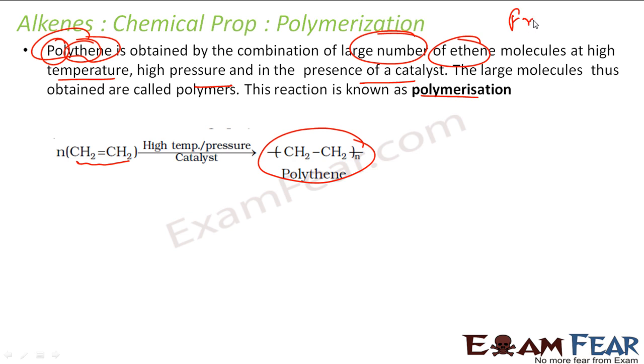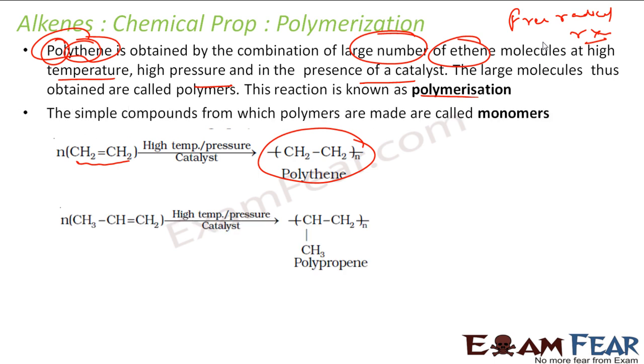The simplest compound from which polymer is made is called monomer. This is my example of polyethene. This is also my example of polypropene because this guy was propene. This guy is ethene, so it is polyethene. This guy is propene, so it is polypropene. Ethene, polyethene. Propene, polypropene.